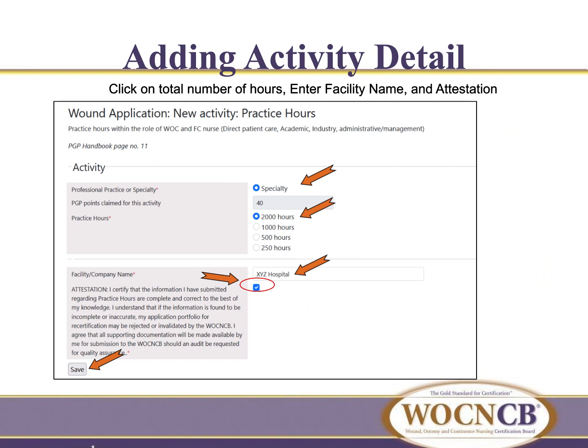A screen appears asking for more information. You'll see that specialty is automatically selected for you, because your practice hours are always considered related to the clinical specialty. Next, click the correct total of practice hours for your entire five-year period and the system populates the point value. Then enter the facility name, click the attestation statement checkbox, and click save.